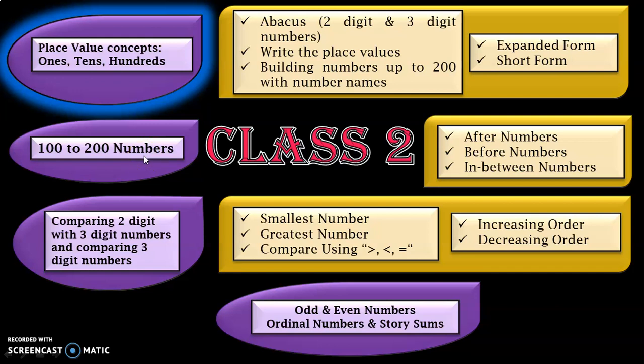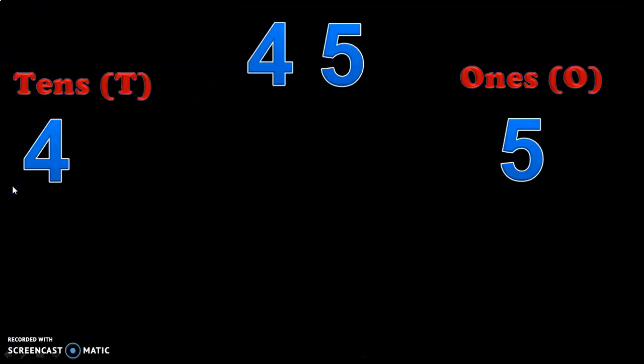In Class 2 we will be dealing with three-digit numbers, but as I explained in the learning outcome video, we will be splitting it into two phases. In the first phase we will be dealing with 100 to 200 numbers, and in the second phase we will be dealing with numbers beyond 200 up to one thousand. So in this video we will be seeing place value concepts for numbers 100 to 200. But first, let us revise the place value concept of a two-digit number.